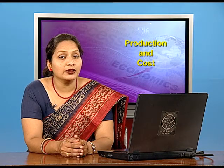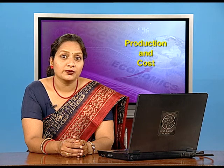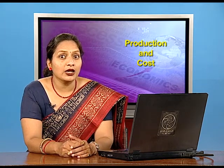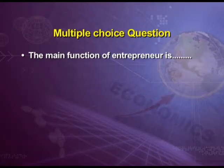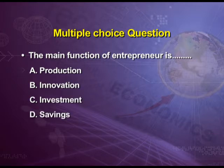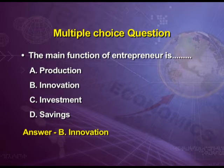Here we have completed the concept of cost. Our chapter Production and Cost completes here. Now we can do some questions to check our knowledge. The first question is: the main function of an entrepreneur is — option A production, option B innovation, option C investment, option D savings. The answer is option B, because the main function of an entrepreneur is innovation.